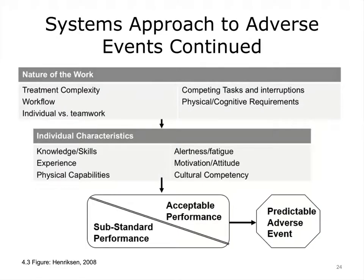This figure represents a continuation of the previous slide, introducing sequences of factors that have the potential to contribute to error and adverse events. The individual is always the last chain of defense and the one who will invariably assume some blame for any mishap.